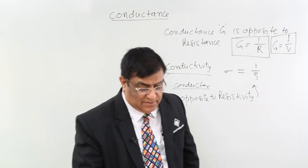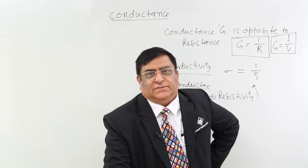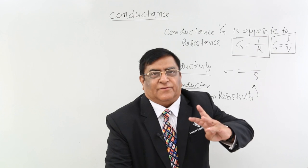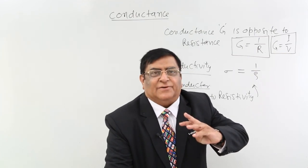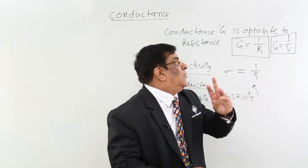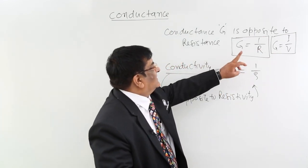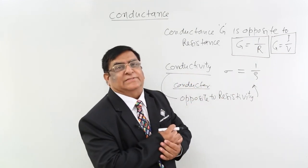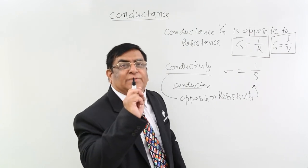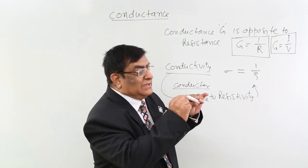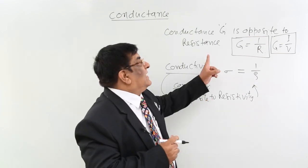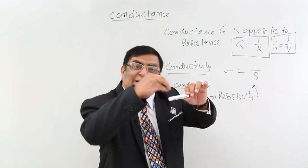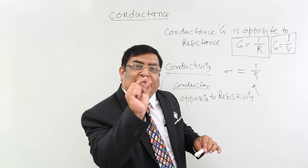Now we will study the microscopic forms of all these quantities — the miniature forms of current, Ohm's law, resistance, and conductance. Miniature form means the one which acts on the atomic level. These are macroscopic forms which we see in a conductor; the whole conductor is visible to us, but whatever is inside it is the microscopic form.